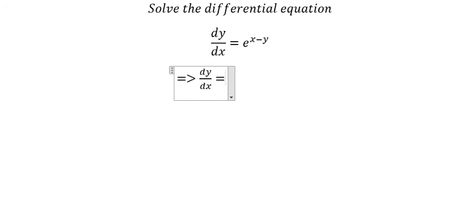We have dy/dx and we have e to the power of x over e to the power of y. Now we need to put e to the power of y on the left side with dy, and multiply the right side by e to the power of x.